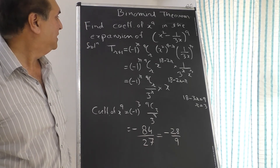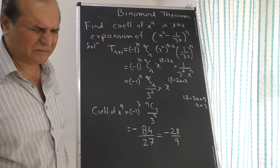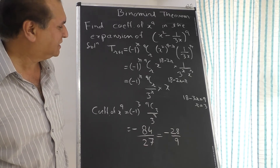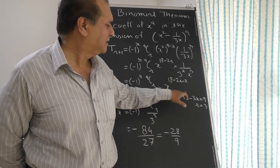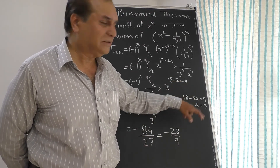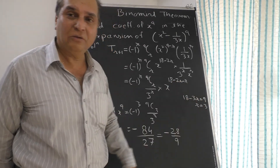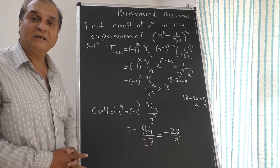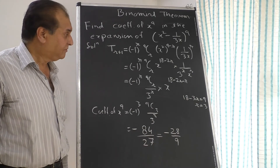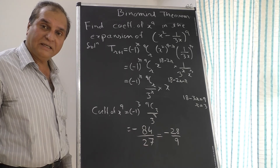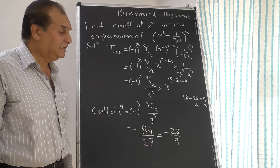If the problem asks to find the term independent of x, it means x to the power 0. You equate 18 minus 3r equal to 0 — whatever power expression you have, equate it to zero — and solve for r. Then substitute back to find the coefficient. It's an easy sum once you understand the method.